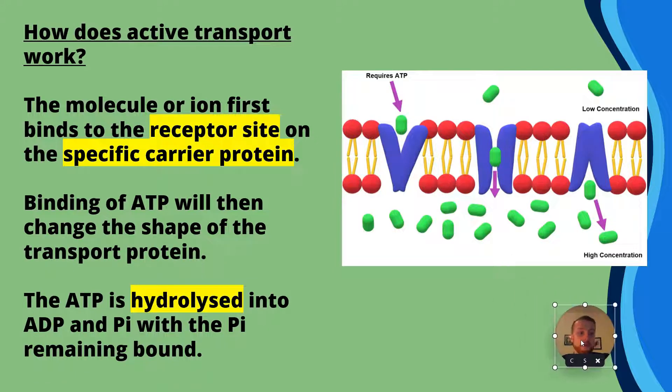So how does active transport work then? Well the molecule or ion binds to the receptor site on the specific carrier protein. Now make sure you're using that technical vocabulary. The molecule or ion first binds to the specific receptor site on the carrier protein. Now the next step is that the binding of ATP will then change the shape of the transport protein. So think about tertiary structures undergoing conformational changes here. Then after this the ATP is hydrolyzed into ADP plus an inorganic phosphate represented by the PI. Now the PI is going to remain bound to the carrier protein.